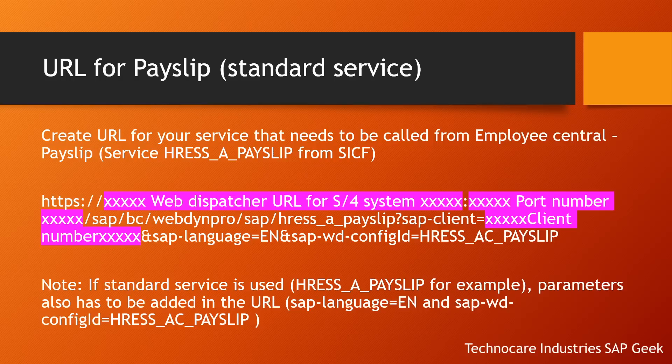Now we need to activate and create URLs for all the applications that we need to call from Employee Central. One by one we will be seeing all the different applications — we will be seeing Payslip, Form 16, Form 12B, Tax Simplifier Statement Standard, and also an example of a custom service. Custom services configured in the S4HANA system can also be called from Employee Central.